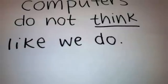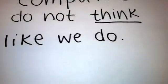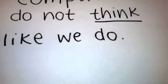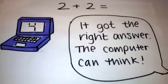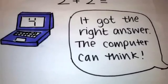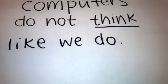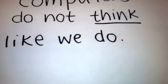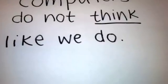Computers are unable to think. They simply spit out the correct response according to what they are given. So when you type in 2 plus 2, the computer spits out 4, because it is programmed to do that. So even though that is the right answer, the computer isn't thinking, because it has no understanding of what it just did. Its programming tells it what to do in that situation.